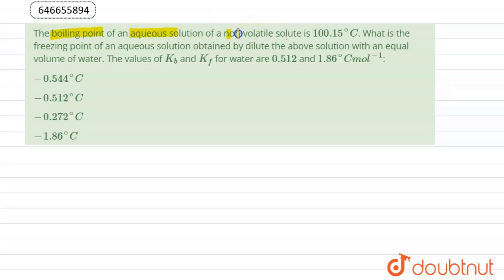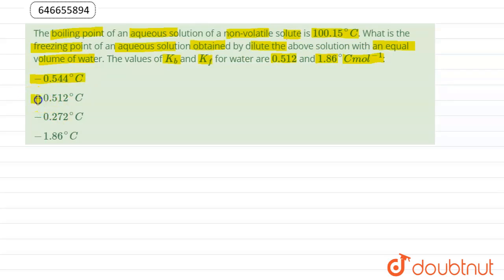The boiling point of an aqueous solution of a non-volatile solute is 100.15°C. What is the freezing point of an aqueous solution obtained by diluting the above solution with an equal volume of water? The values of Kb and Kf are 0.512 and 1.86°C per molal. Options: (A) -0.544°C, (B) -0.512°C, (C) -0.272°C, (D) -1.86°C.